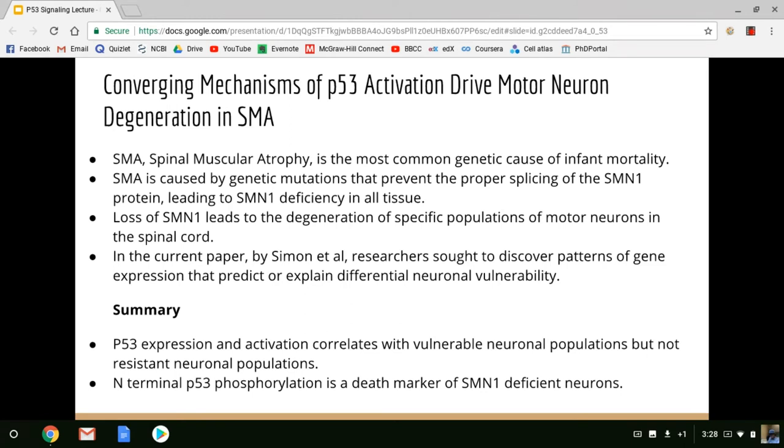Closer examination revealed that in-terminal p53 phosphorylation is a death marker of SMN1 deficient neurons. So although p53 did eventually spike in some of the resistant neurons in the late stages of disease, the p53 was generally not phosphorylated. And it appears that p53 expression and activation by phosphorylation were the critical markers that predicted neurons that were vulnerable. So ultimately, p53 expression and p53 phosphorylation were death markers of vulnerable neurons.